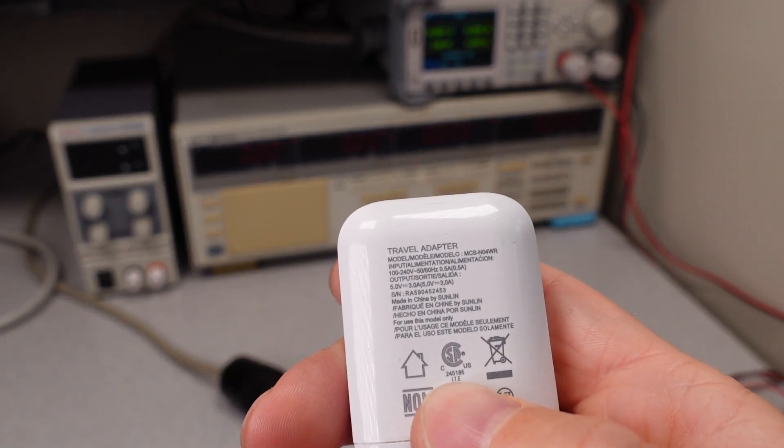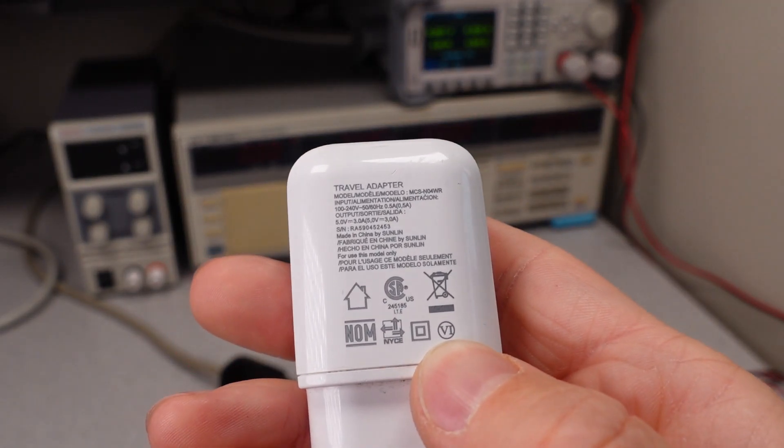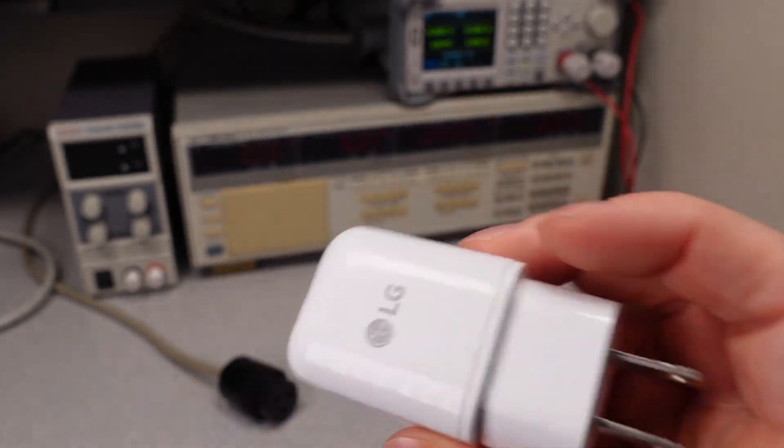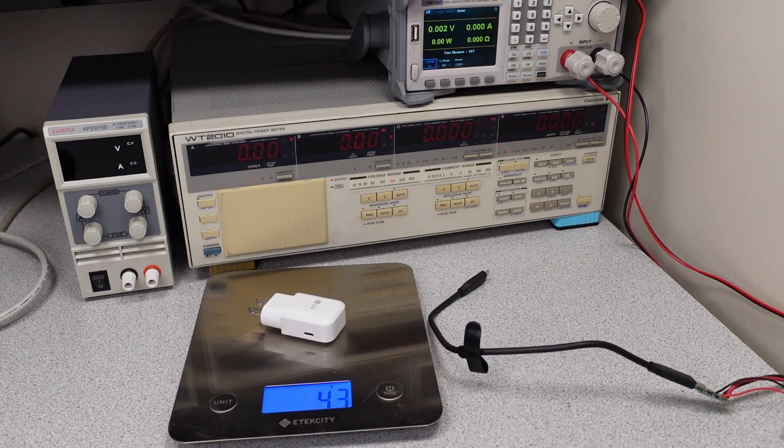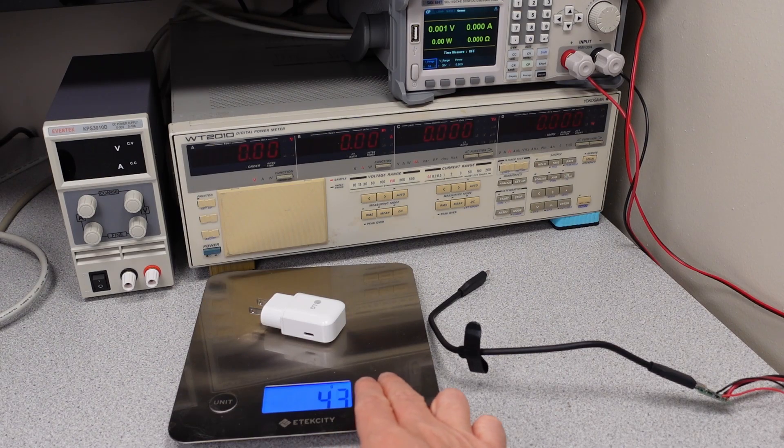You can see that it has the CSA safety rating, and it has a class 6 efficiency rating, so we should expect very low idle power consumption from this one. Let's see what we have for weight. 43 grams, so it's quite a light unit.